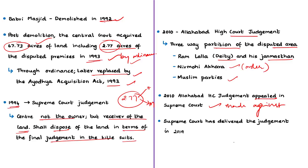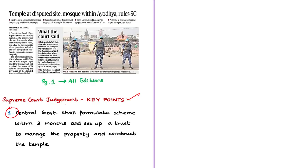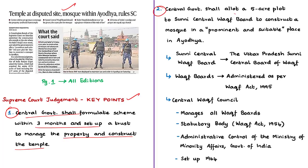Now let us see the key points from the Supreme Court judgment. First, the Supreme Court asked the central government to formulate a scheme within three months and set up a trust to manage the property and construct the temple. Second, the Supreme Court asked the government to allot a court plot to the Sunni Central Waqf Board to construct a mosque in a prominent and suitable place in Ayodhya. Here, Waqf means an endowment or finance made by a Muslim to a religious, educational, or charitable cause.